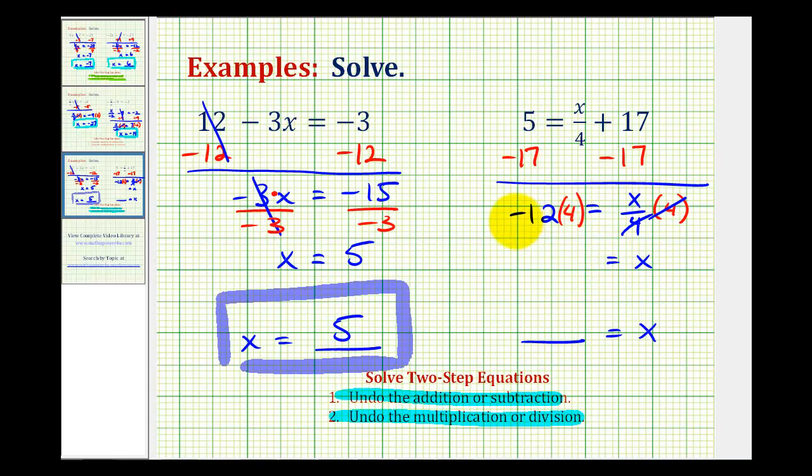And on the left side, we have negative 12 times positive four, which is equal to negative 48. So our solution is negative 48 equals x. But you'll normally see this reversed and written as x equals negative 48.